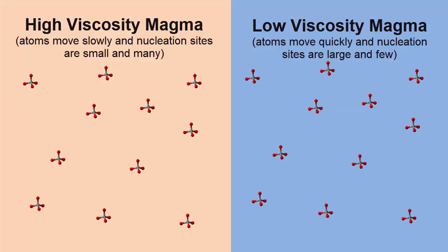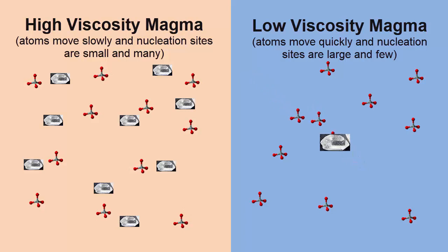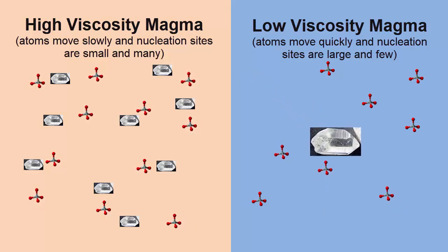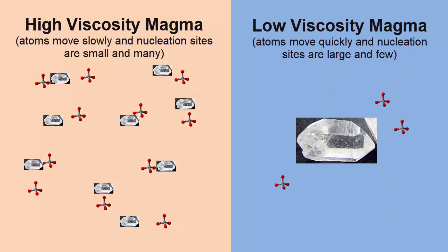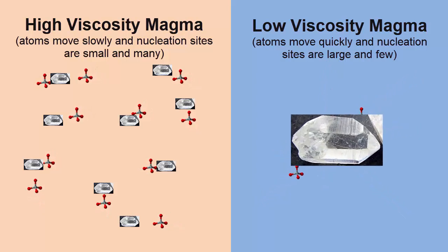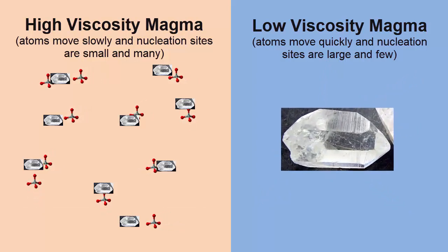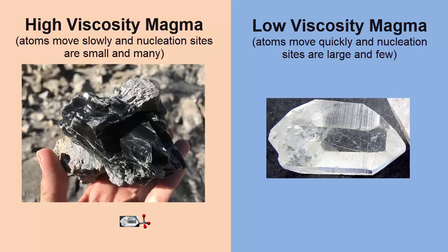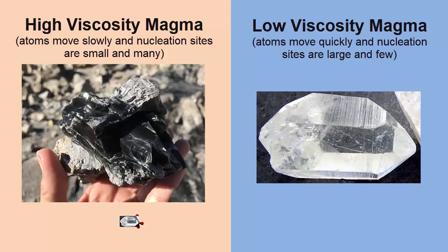Erupted lavas that are high in viscosity will generally have smaller crystals because the lavas cool faster than ions can travel through the magma to nucleation sites. In extremely viscous lavas, there can be no time for any crystals to grow, and we end up with glass or obsidian.